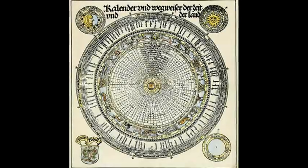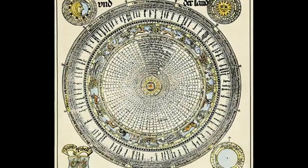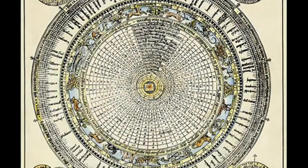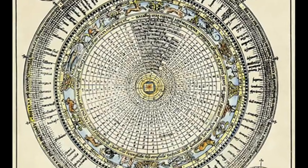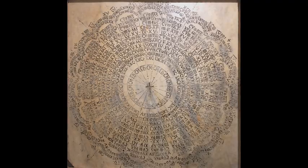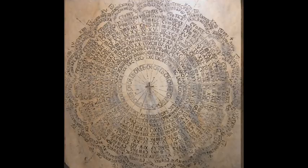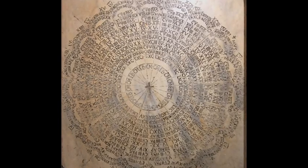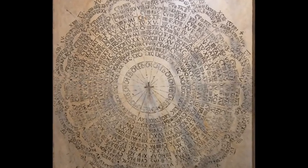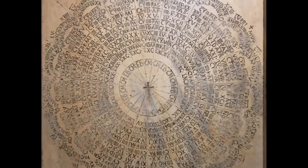By the 16th century, a sizeable drift had developed between the Julian calendar, the lunar calendar and the real moon. Consequently, the date on which the church celebrated Easter had begun to move away from the time that it had been celebrated by the early church.